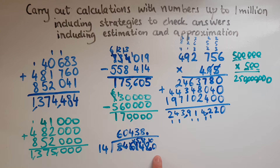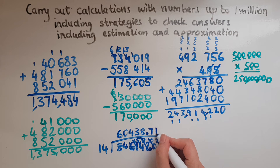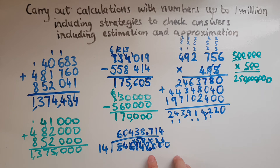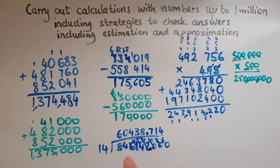Now we're looking at how many 14s fit into 100, and it is 7 of them, because 7 lots of 14 give us 98, so there will be 2 remaining. We can add zeros again — zeros after the decimal point don't make any difference; they have no value. So how many 14s into 20? That's just 1 of them, and we'd have 6 remaining, so this becomes 60. How many 14s into 60? That is 4 of them. As you can see this is not ending — we could continue for a long time with this decimal. However, if you've got 3 decimal places, we're pretty much there and we can stop. So our answer would be 60,438.714.